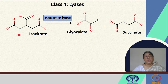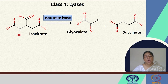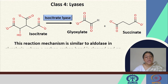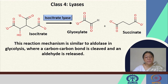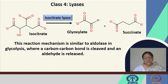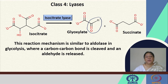In class 4 enzymes, the lyases, we will look at the example of isocitrate lyase, which cleaves a bond in isocitrate to produce glyoxylate and succinate. This reaction mechanism is similar to aldolase in glycolysis, where a carbon-carbon bond is also cleaved and an aldehyde is released. Here we see the release of the glyoxylate ion and the succinate ion, both derived from isocitrate.